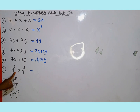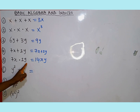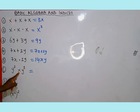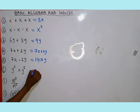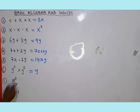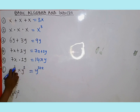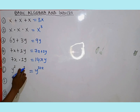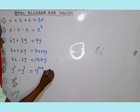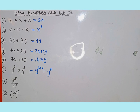Number six involves indices: we are given y to the third power multiplied by y to the second power. According to the multiplication law of indices, since the bases are the same, we write the base y and add the two powers together: 3 plus 2 gives us y to the fifth power.